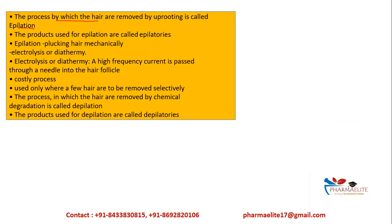The process by which hair are removed by uprooting is called epilation. Epilation is mainly plucking of hair mechanically, or it could be by electrolysis or diathermy. In these techniques, a very high frequency current is used to pick the hair follicle through a needle, making it a possibly painful technique.